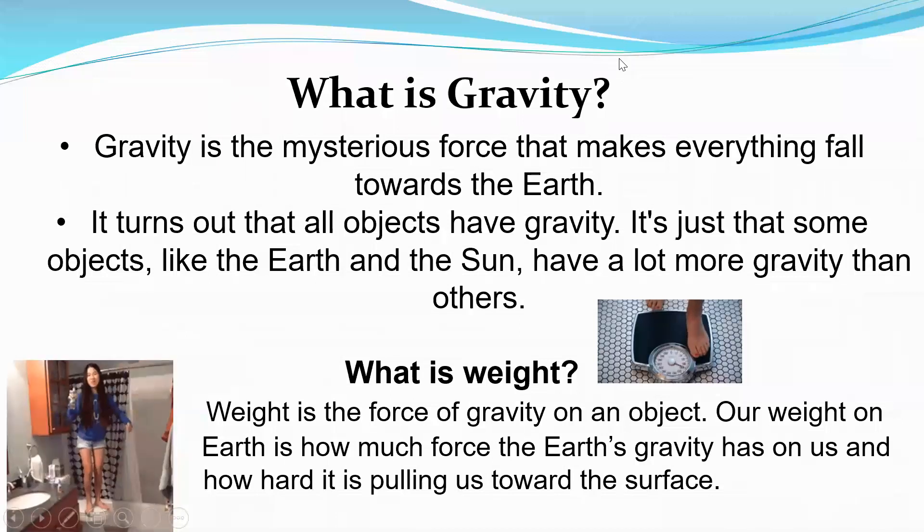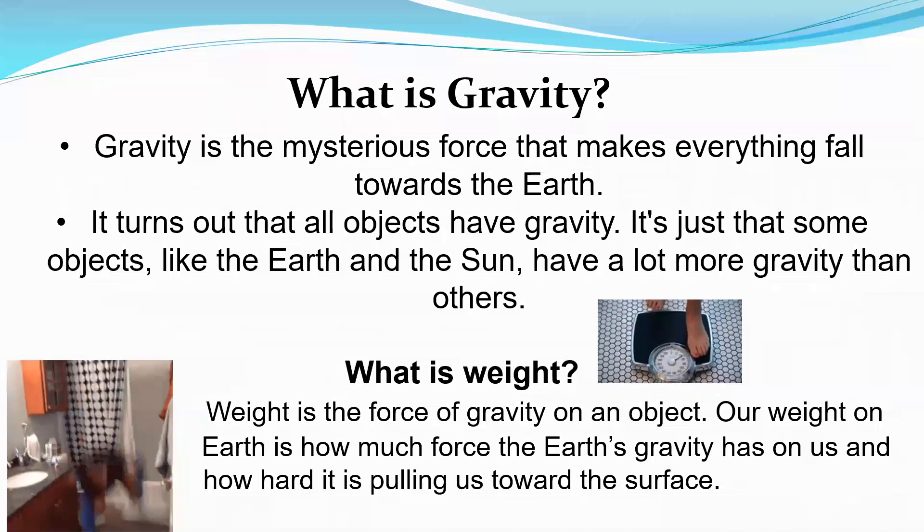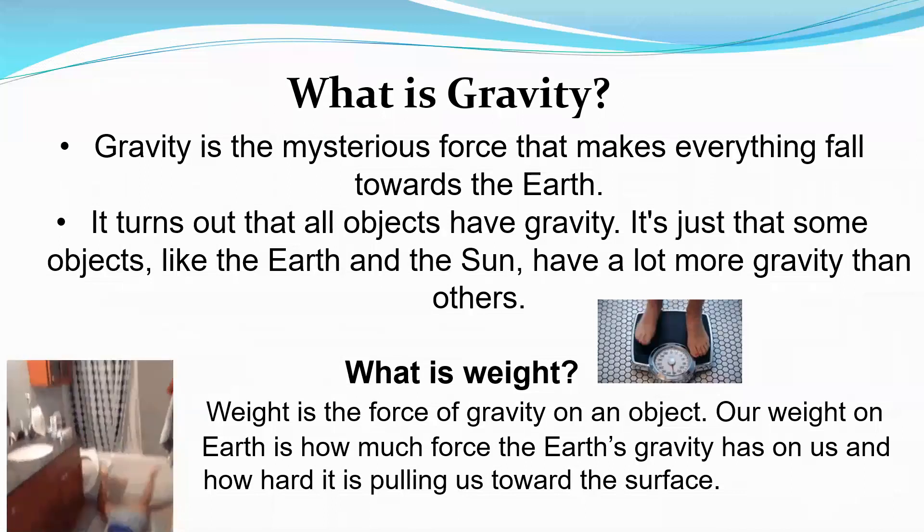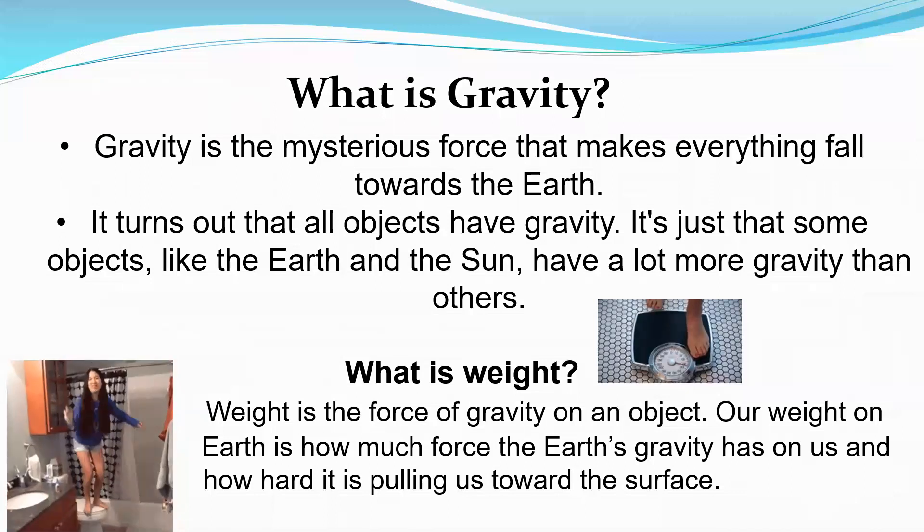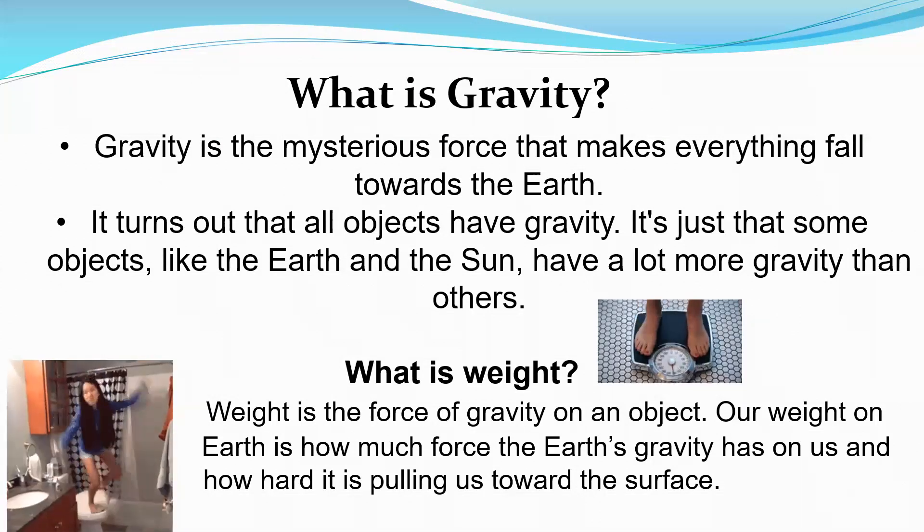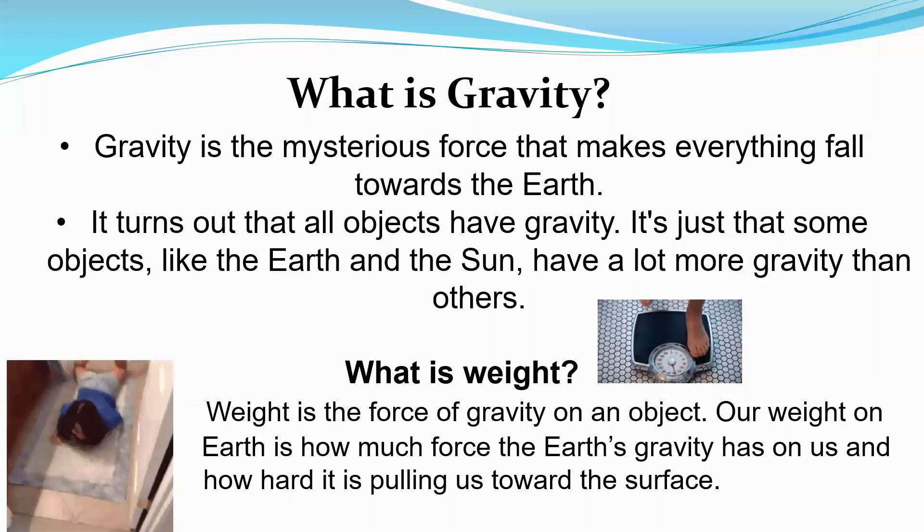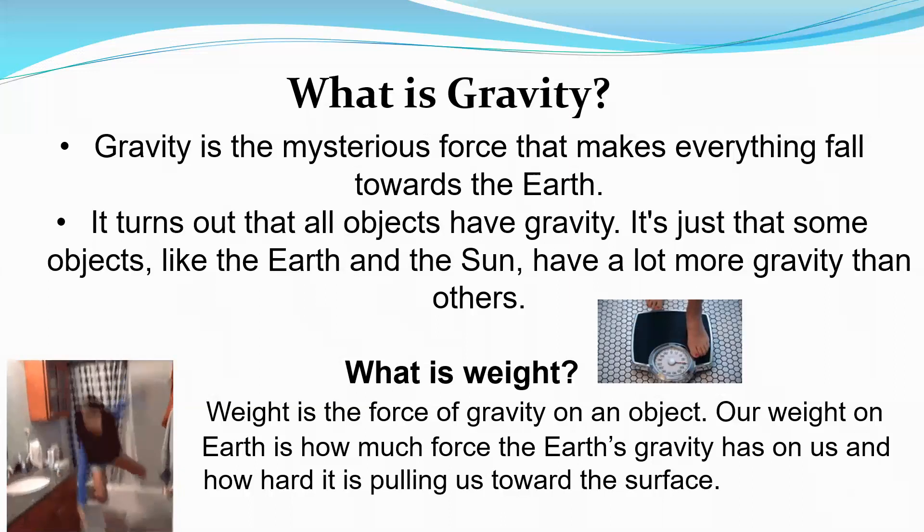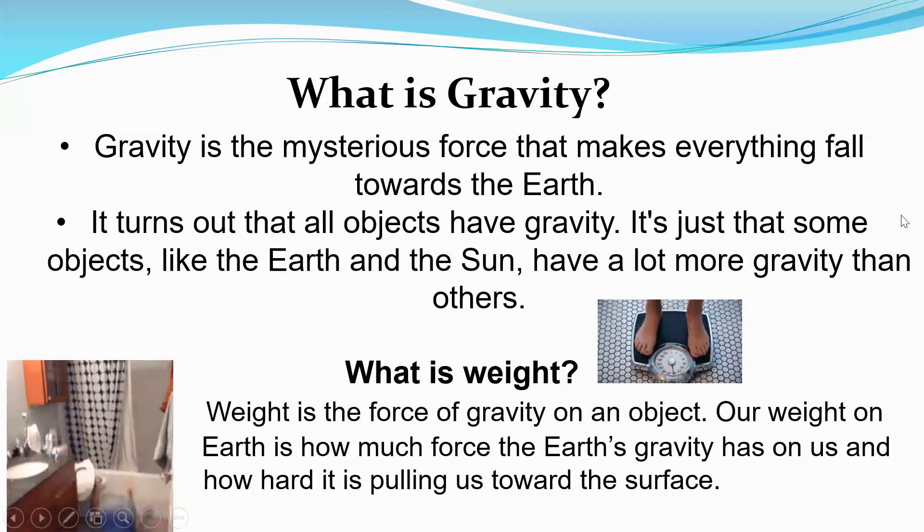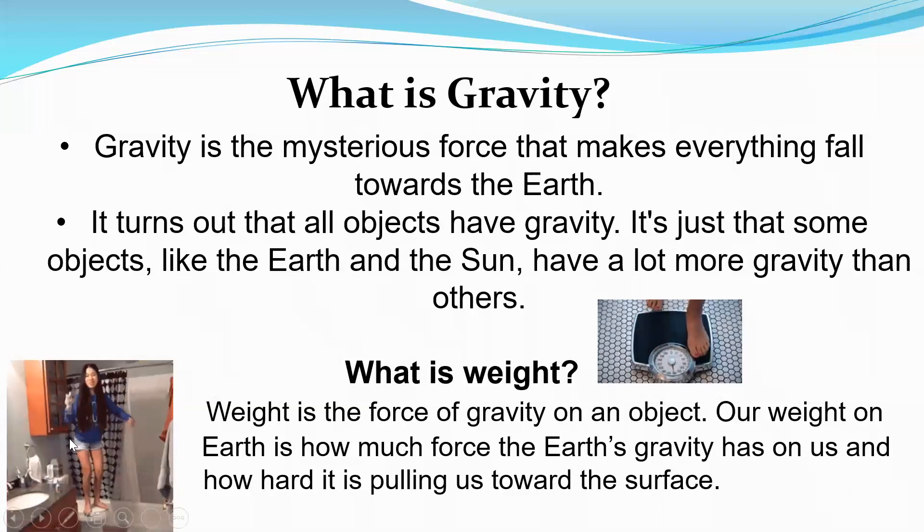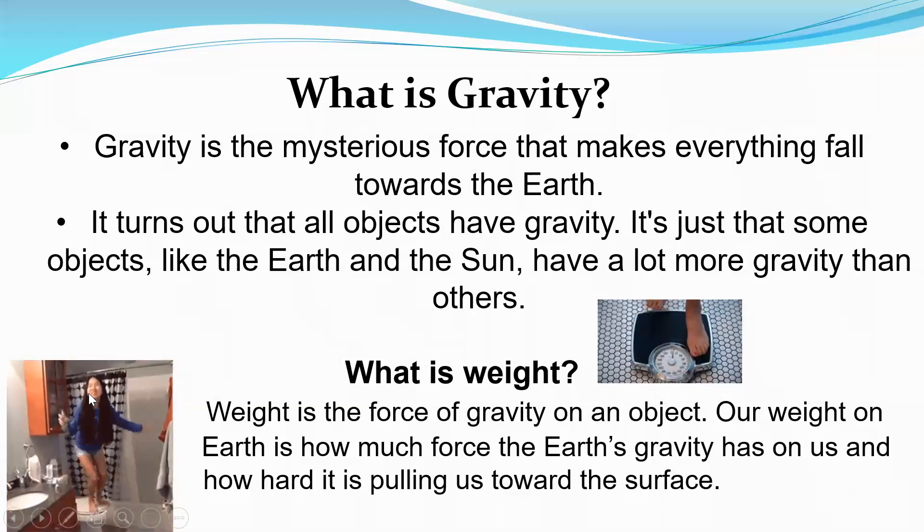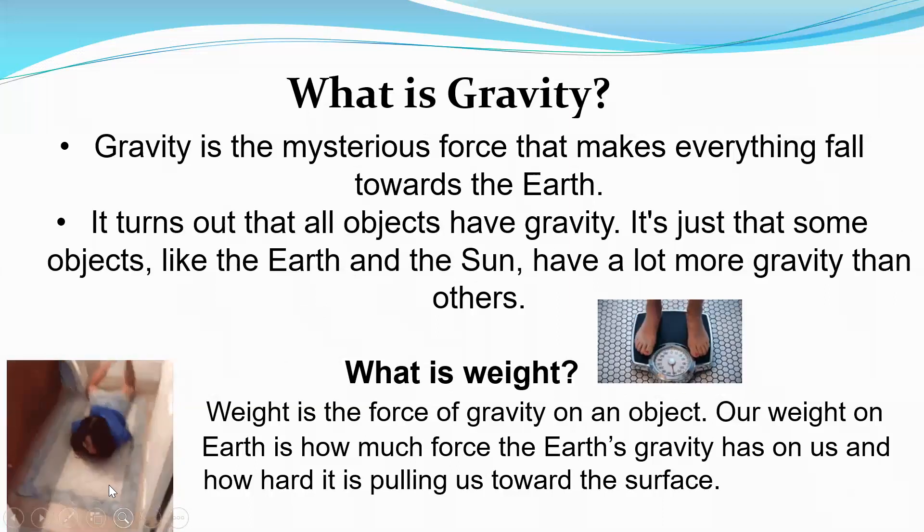Then we have gravity. Gravity is the mysterious force that makes everything fall towards the earth. It turns out that all objects have gravity. It's just that some objects, like the earth and the sun, have a lot more gravity than others. Weight is the force of gravity on an object. Our weight on earth is how much force the earth's gravity has on us and how hard it is pulling us towards the surface. So here we have an example of weight, a person standing on a weight. Then we have an example of gravity. This young girl accidentally falling from somewhere she shouldn't be standing, and gravity is taking its place. If it wasn't for gravity, she would just hover there.